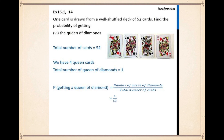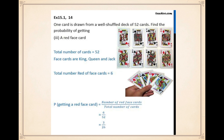You can try this at home if you have a deck of cards. Next question: one card is drawn from a well-shuffled deck of 52 cards. Find the probability of getting a red face card. Total number of cards is 52. Face cards are king, queen, and jack — and there are six red face cards. So we write six over 52, or simplified three over 26 — and that's our probability as a fraction.